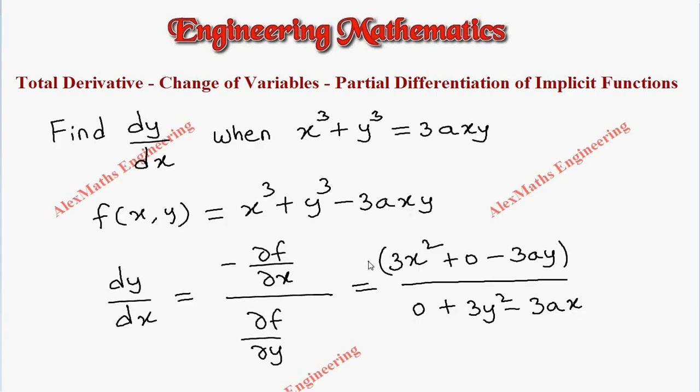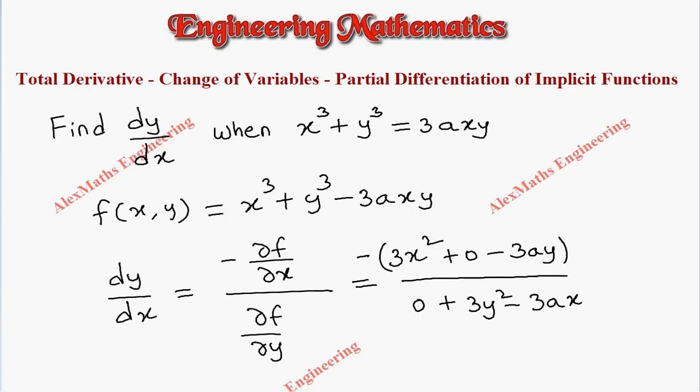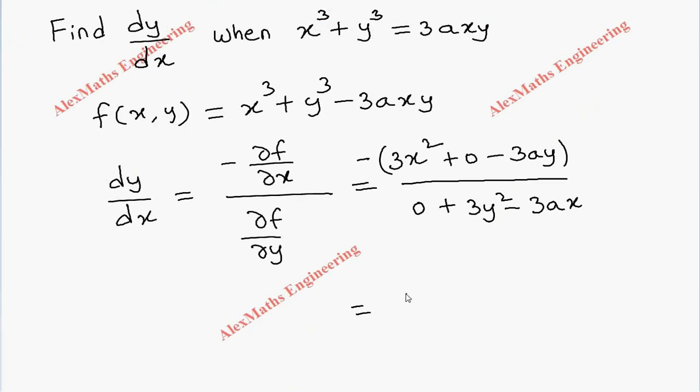And we have a minus sign common in the numerator. So totally this is minus of 3x square minus 3ay whole divided by 3y square minus 3ax.